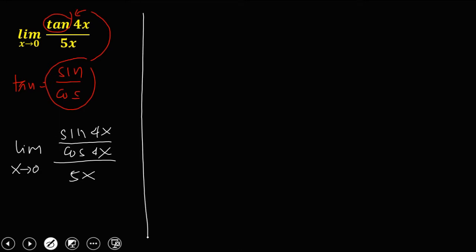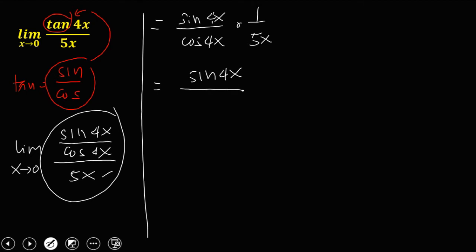Then simplify this equation. We have sine 4x over cosine 4x times the reciprocal of this 5x, that's 1 over 5x. Then simplify, so sine 4x over, multiply, so we have 5x then cosine 4x.